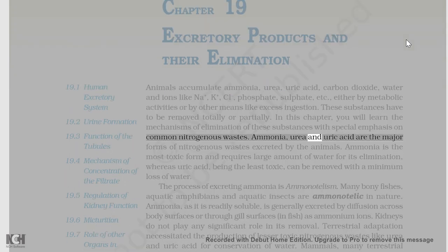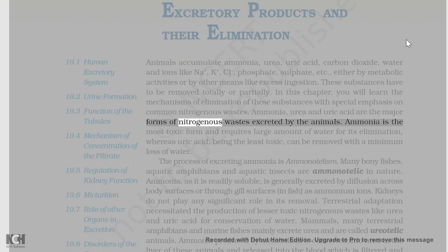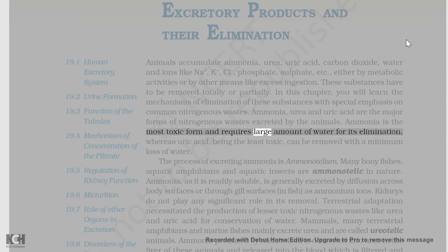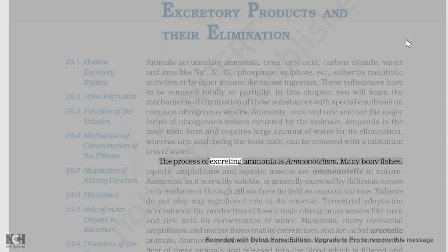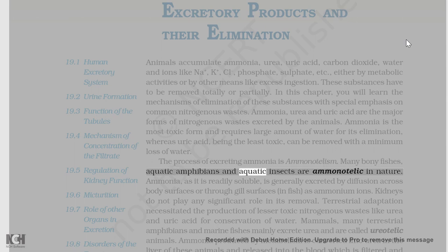Ammonia, urea, and uric acid are the major forms of nitrogenous wastes excreted by the animals. Ammonia is the most toxic form and requires a large amount of water for its elimination, whereas uric acid, being the least toxic, can be removed with a minimum loss of water. The process of excreting ammonia is ammonotelism. Many bony fishes, aquatic amphibians and aquatic insects are ammonotelic in nature.